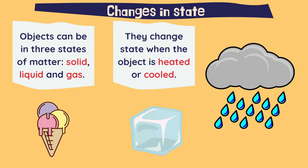This depends on the temperature. With more temperature the object is heated, or cooled when the temperature goes down. For example, here we have the cloud, which is vapor water in gas state. The liquid is the rain, is the liquid water. And if we cool the water, for example in the fridge, we can have this ice cube.